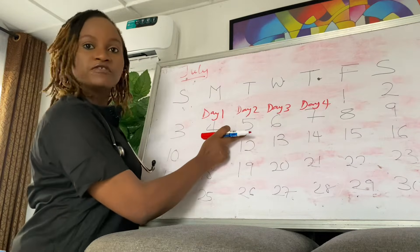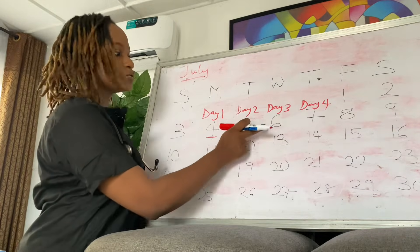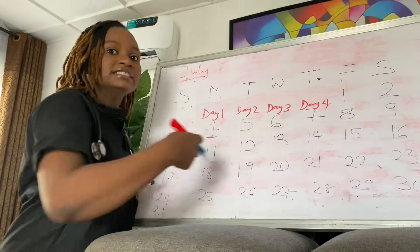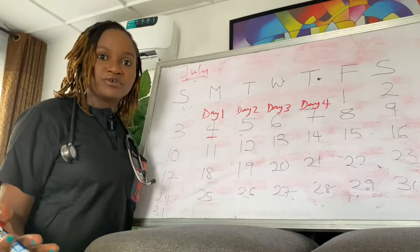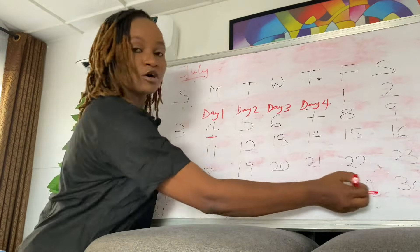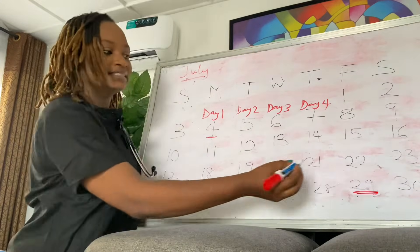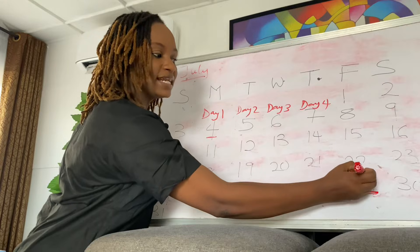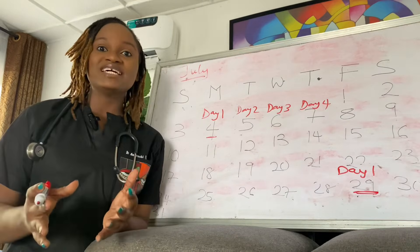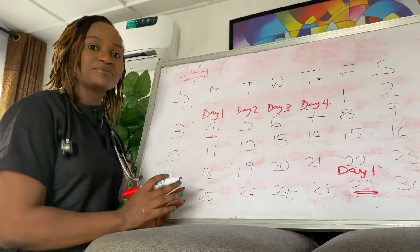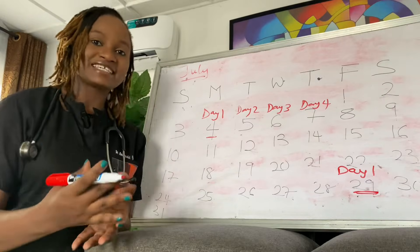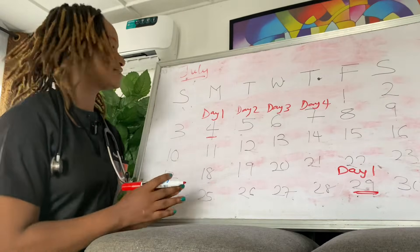So the 4th of July is day one, 5th of July is day two, 6th of July is day three, and 7th of July is day four. Then you finish your period. The next time you see your period is on the 29th of July, and that will be day one of your next cycle.